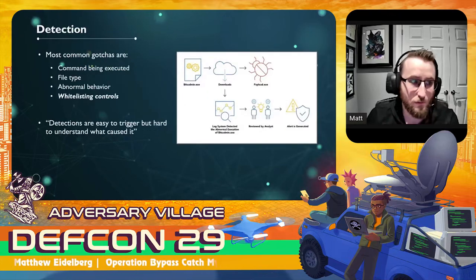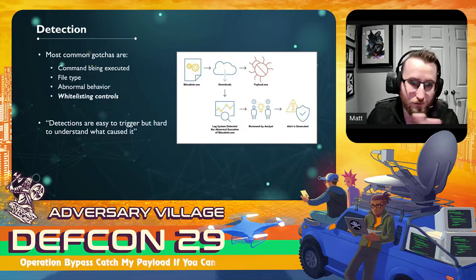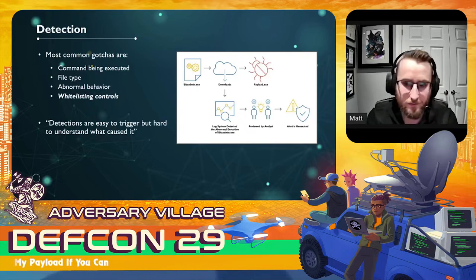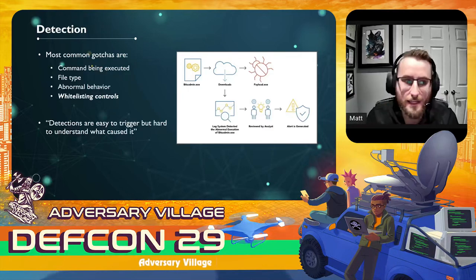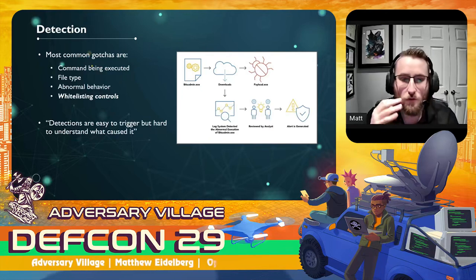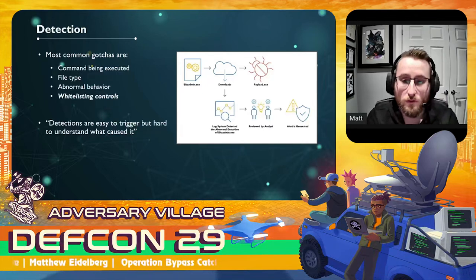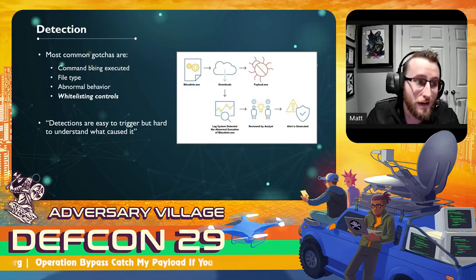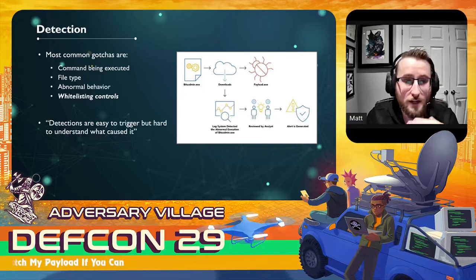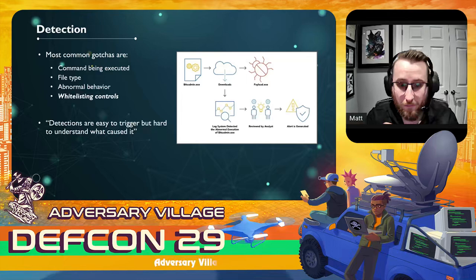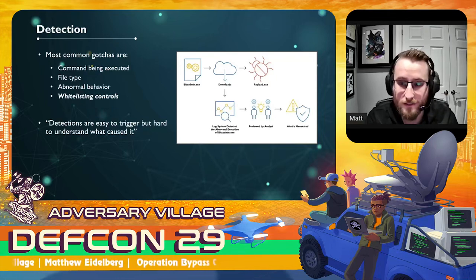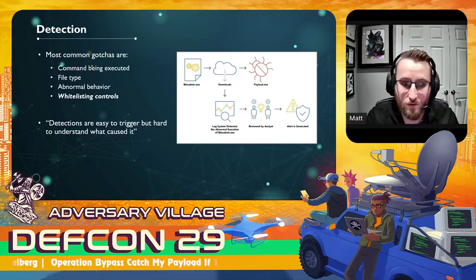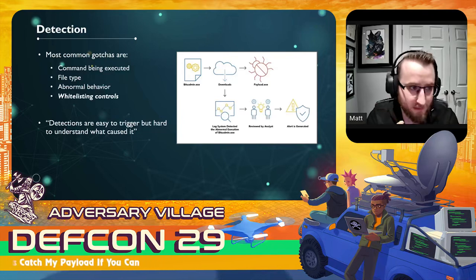The most common detection gotchas break down into four areas. First, what command are you executing? These days, things like PowerShell or BitsAdmin are very highly indicated — there's been a lot of research on prominent LOL bins, so there's a high chance a rule is looking for their execution. You also have to be mindful of the file type. If you're downloading a binary from a random location, web proxies can see it as a large data stream, and binaries have a universal header that's easy to detect.